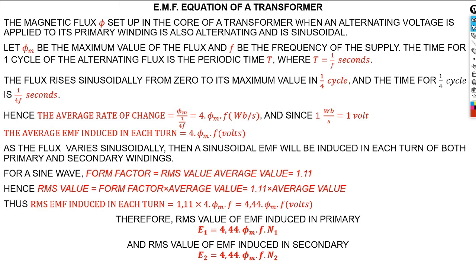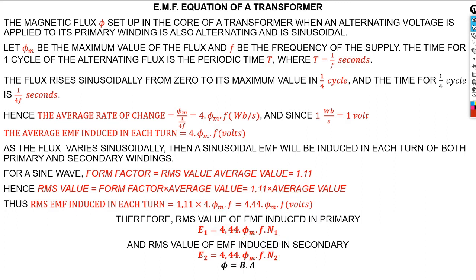The RMS value of the induced EMF in the primary is given by that equation, where we now include the number of turns. This is for one turn, but as the number of turns increases, the voltage increases significantly. The same equation applies to both sides of the transformer — primary and secondary — just using the respective number of turns N1 and N2. The flux is the same for both. Also remember from Electrical 1 that flux equals flux density B times the cross-sectional area A of the ferromagnetic core. The three important formulas to note are these.